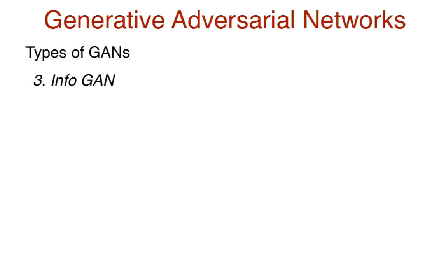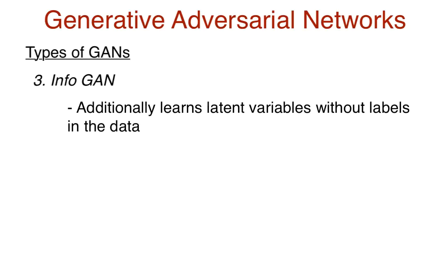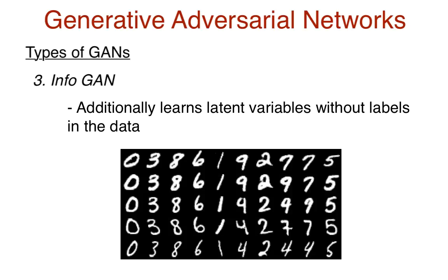Another type of GAN is the Info GAN. This type is not only able to generate images, but also learns meaningful latent variables without any labels in the data. One example given in the paper is that when an Info GAN is trained on the MNIST dataset, variables representing the type of digit 0 through 9, the angle of the digit, and the thickness of the stroke are all inferred automatically. Here's an example output where a salient variable is varied over every row — you can see that as the variable value changes, there is a difference in the thickness of the brush stroke.